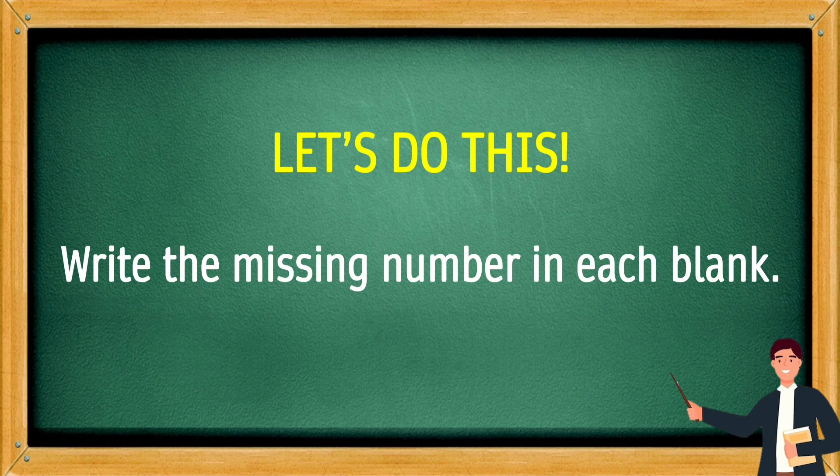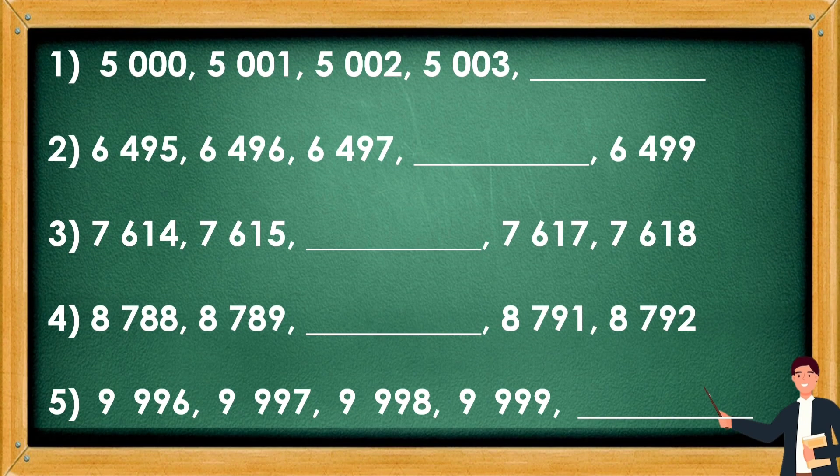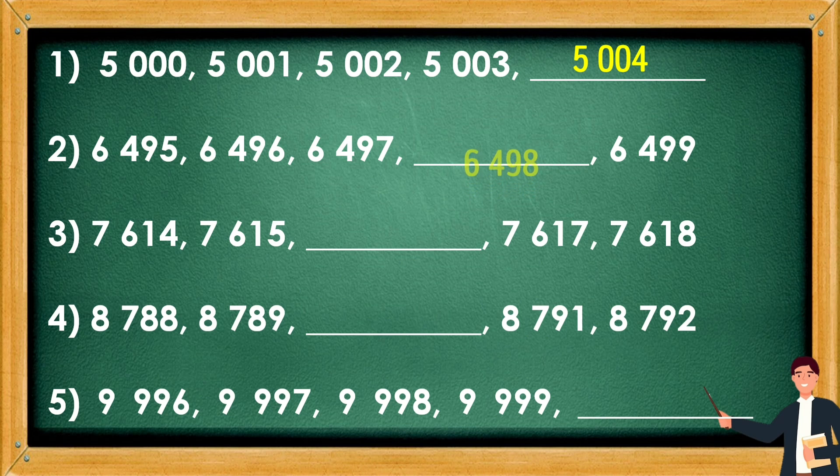Let's do this. Write the missing number in each blank. 5,004, 6,498, 7,616, 8,790, 10,000.